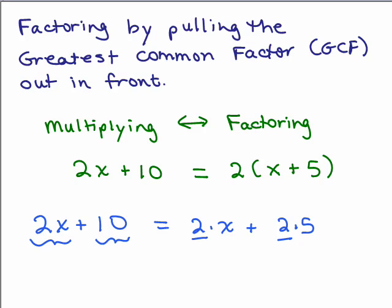What we could do is pull that out to the front. It's like doing the opposite of the distributive property. You're going backwards. You have to think 2 times what will give you 2x, that would be x, plus 2 times what would give you 2 times 5? The 5. And you would check by doing the distributive property and seeing that, yes, 2 times (x plus 5) really is the same as 2x plus 10.